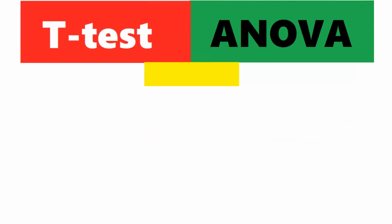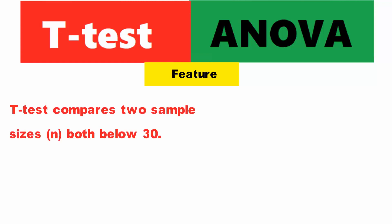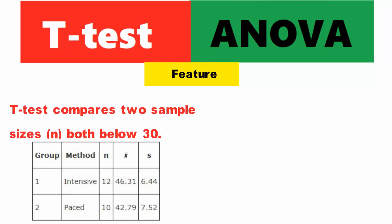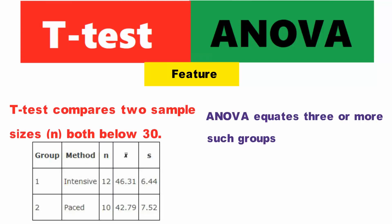4. Feature: T-test compares two sample sizes, both below 30. ANOVA equates three or more such groups.